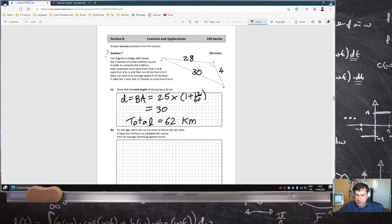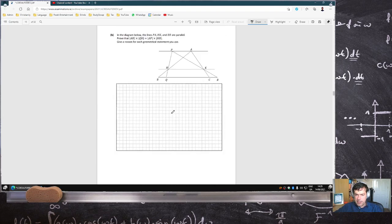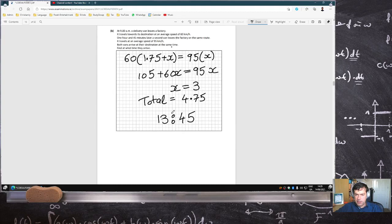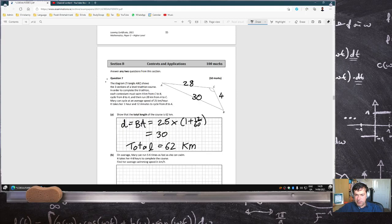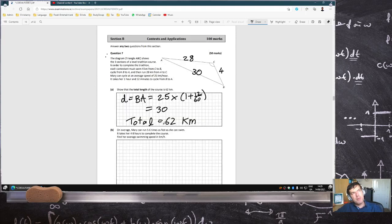On average, Mary can run 5.6 times as fast as she can swim, and it takes her 4.8 hours to complete the course. Find her average swimming speed. This question is remarkably similar in its concept to the one earlier. There's a bit of redundancy in this paper. Similar to how paper 1 had a lot of calculus in it, paper 2 seems to be a bit redundant on testing the student's knowledge of distance, speed, and time. Quite disappointing.